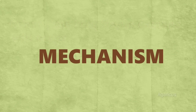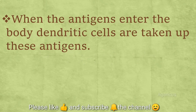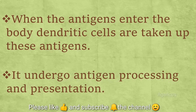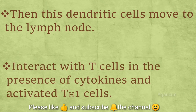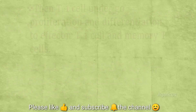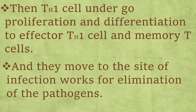Next, we are discussing the mechanism. When antigens enter the body, dendritic cells take up these antigens and undergo antigen processing and presentation. Then these dendritic cells move to the lymph nodes, interact with T-cells in the presence of cytokines, and activate Th1 cells. Th1 cells then undergo proliferation and differentiation into effector Th1 cells and memory T-cells.